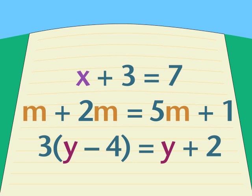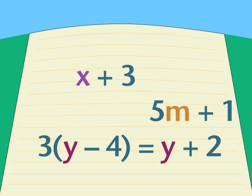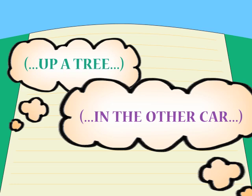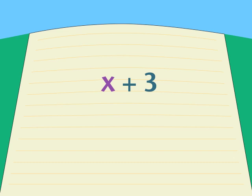Two important things to know about equations is what an equation is not, if you want to really understand what it is. First, an equation is not simply a phrase, or a thought, or an algebra expression by itself. In words, a phrase is something like 'up a tree' or 'in the other car.' In algebra, a phrase or expression would be something like x plus 3, or 20 divided by x. Expressions, or phrases, say something, but not very much.